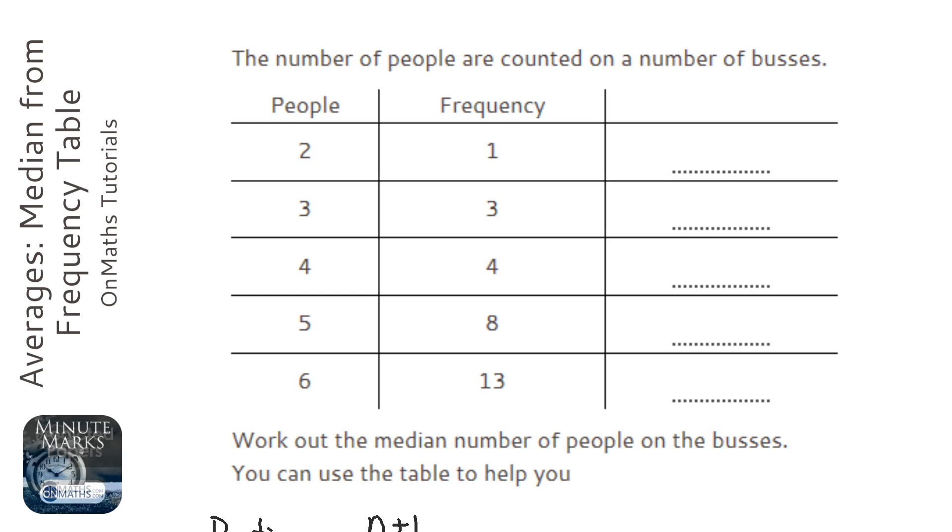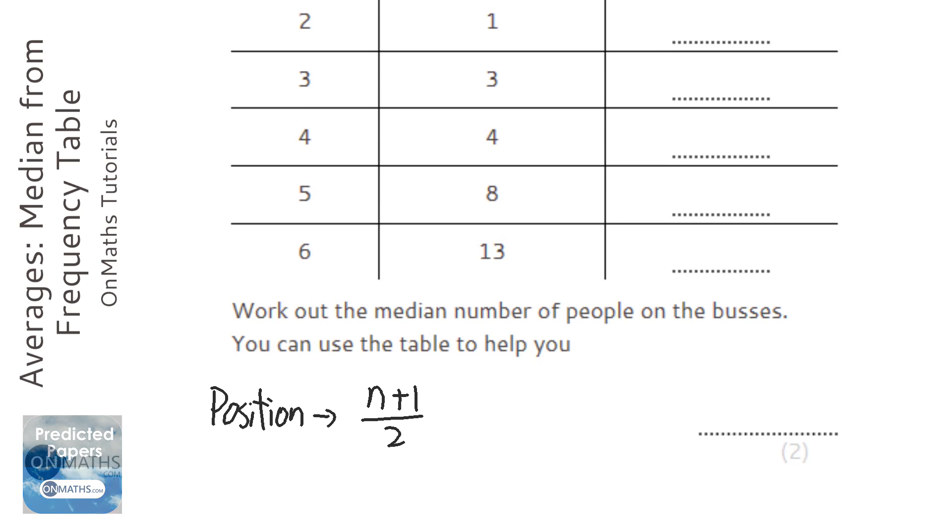You work out how many there are in total, which we can do on the calculator: 1 plus 3 plus 4 plus 8 plus 13, which is just all the frequencies added together, which is 29. Add 1 to it and halve it. So that's 30 divided by 2, which is 15.